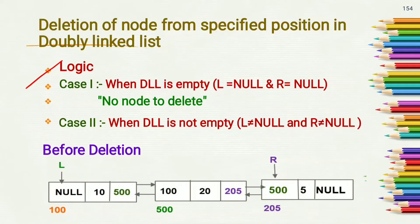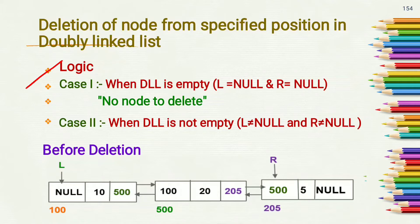The logic is: Case 1 - when the doubly linked list is empty, that means the value of l and r is equal to null, then we have to display a message that there is no node in the doubly linked list, or we have to write 'no node to delete' and exit from the code.